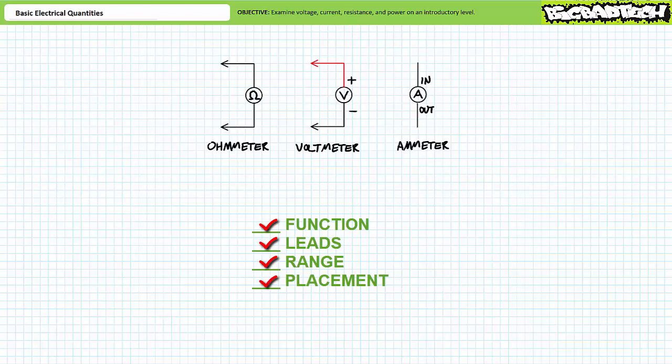Placement. This is the single most important step. One must put the DMM in the proper place to take the measurement of interest. Put it in any other place than the proper place, you won't be able to take the measurement you desire or you'll damage the meter, the circuit, or yourself.